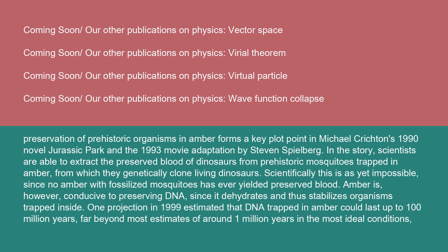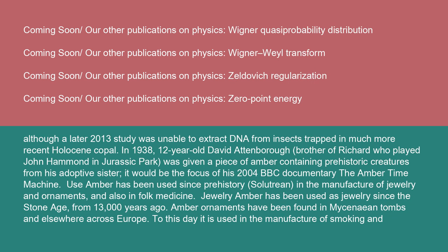The preservation of prehistoric organisms in amber forms a key plot point in Michael Crichton's 1990 novel Jurassic Park and the 1993 movie adaptation by Steven Spielberg. In the story, scientists are able to extract the preserved blood of dinosaurs from prehistoric mosquitoes trapped in amber, from which they genetically clone living dinosaurs. Scientifically, this is as yet impossible, since no amber with fossilized mosquitoes has ever yielded preserved blood. Amber is, however, conducive to preserving DNA, since it dehydrates and thus stabilizes organisms trapped inside. One projection in 1999 estimated that DNA trapped in amber could last up to 100 million years, far beyond most estimates of around 1 million years in the most ideal conditions, although a later 2013 study was unable to extract DNA from insects trapped in much more recent Holocene copal.